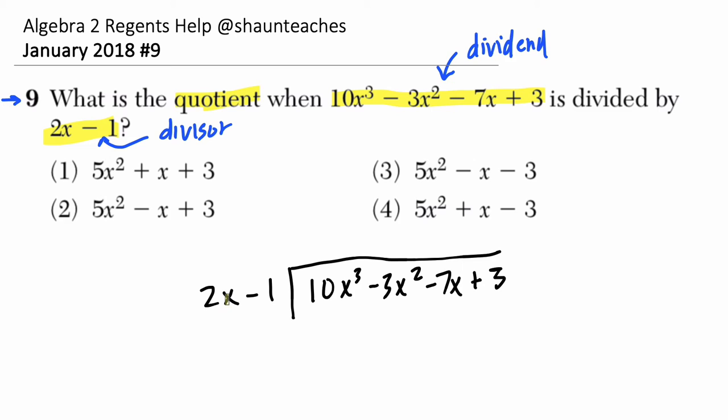When we do this division, we're looking at the leading terms. We want to say how many times does 2x go into 10x³? 10x³ divided by 2x: 10 divided by 2 is 5, and x³ divided by x is x². Now we take that 5x² and multiply it by 2x and negative 1 to find out what the remainder is.